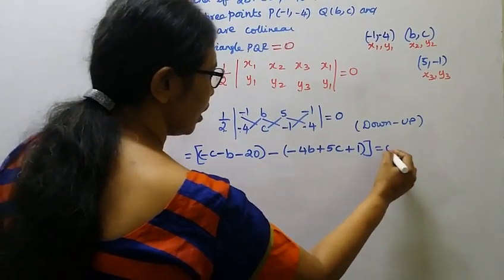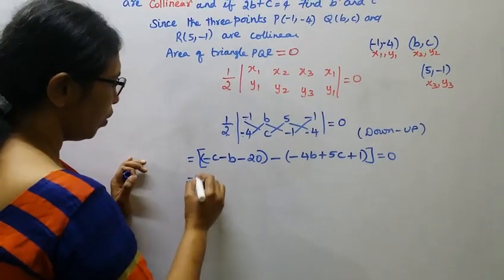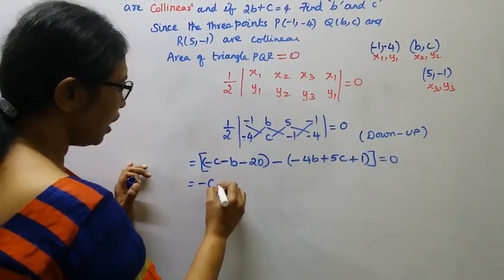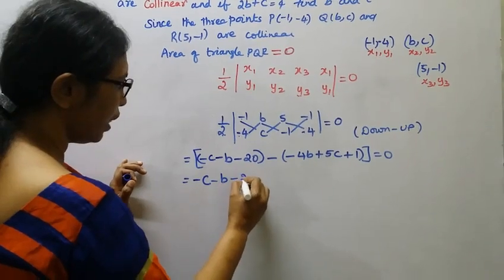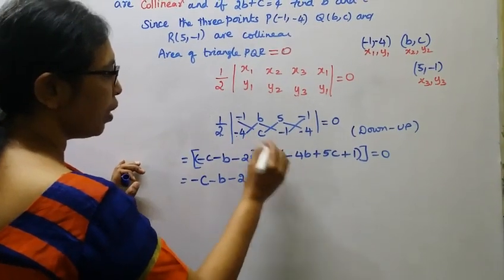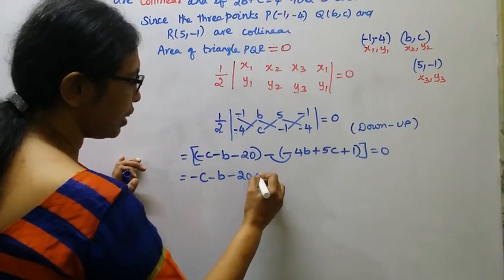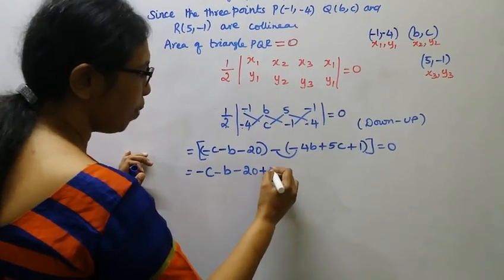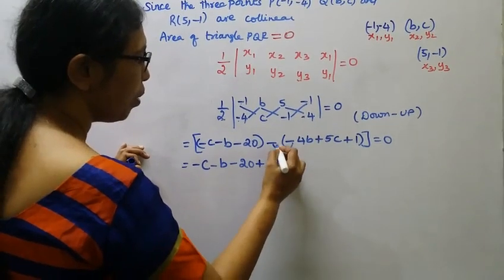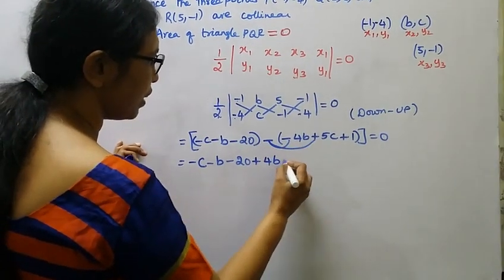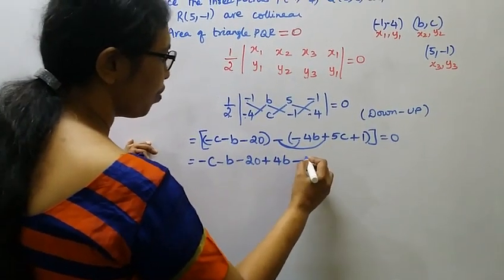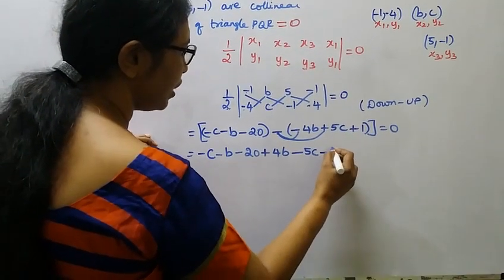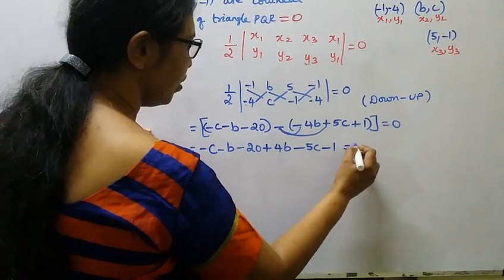Minus the upward diagonal products: (-4) into B gives minus 4B; then C into 5 gives plus 5C; then 1 into 1 gives plus 1. The whole expression equals zero.